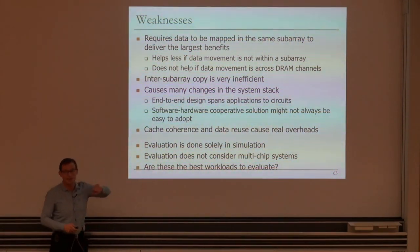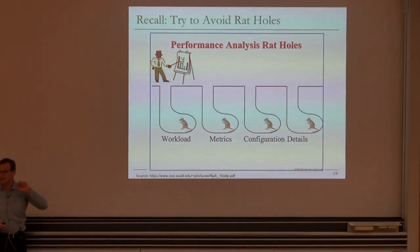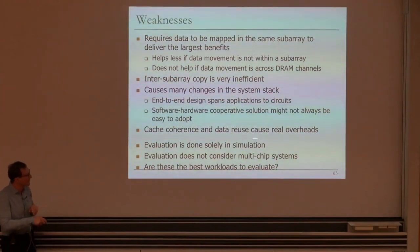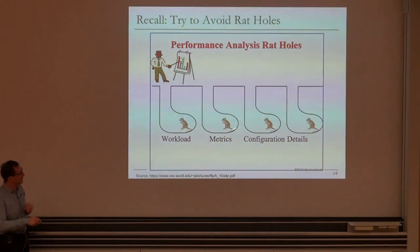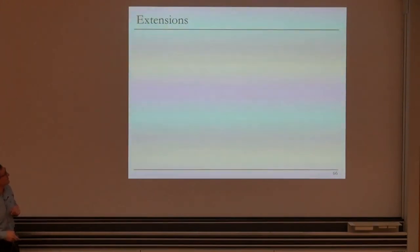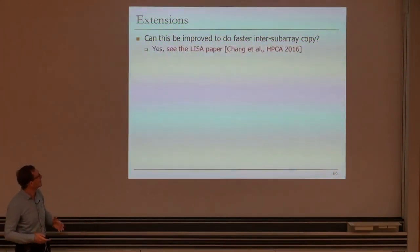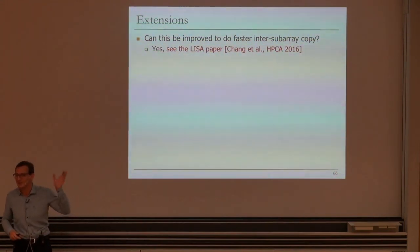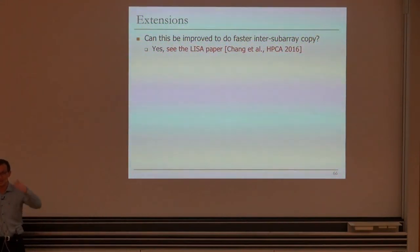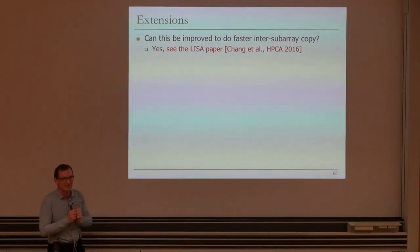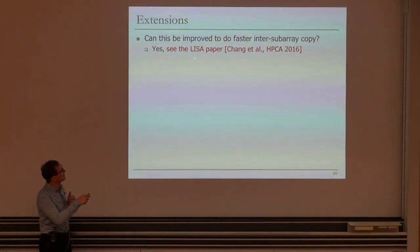Cache coherence and data reuse cause real overheads that are not fully analyzed in the paper. On evaluation: it's done only in simulation, doesn't consider multi-chip systems, and one can question whether these are the best workloads. That said, there are likely many other workloads with heavy copy and initialization that could work in favor of the mechanism. Try to avoid the rat holes — if we focus only on simulation weaknesses, we'd spend all our time on that rather than more substantive discussion. For thoughts and ideas: can inter-subarray copy be improved? My other student asked exactly this and developed a paper called LISA — Low-cost Inter-Linked Subarrays — to solve it.